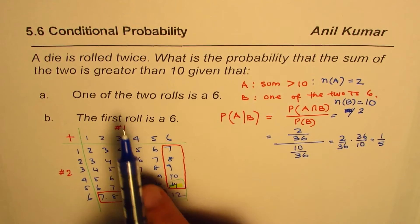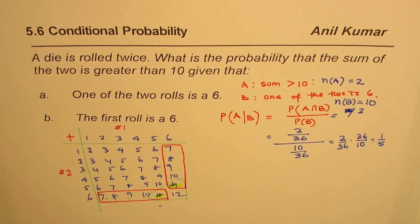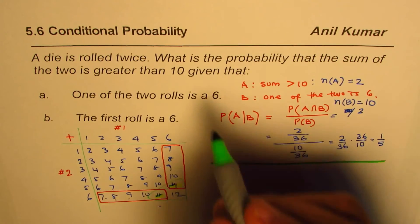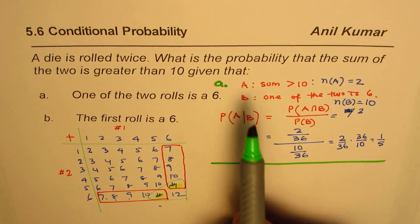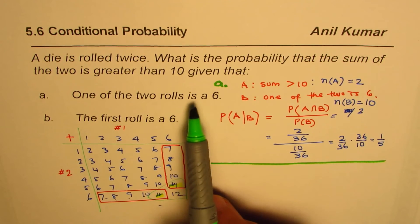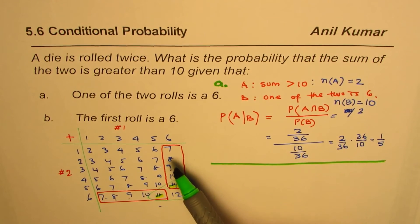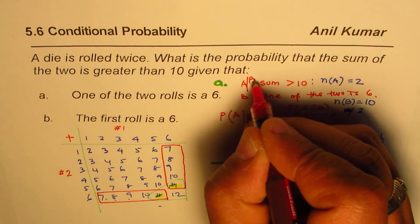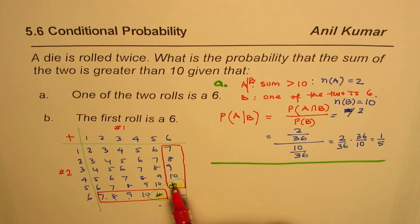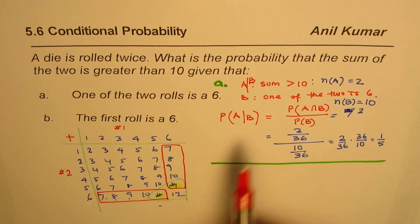So the probability is 1/5 when one of the two rolls is a 6. To summarize part A: event A is sum greater than 10, event B is one of the rolls is 6. The intersection A ∩ B gives 2 elements, and B gives 10 elements, leading to the answer of 1/5.